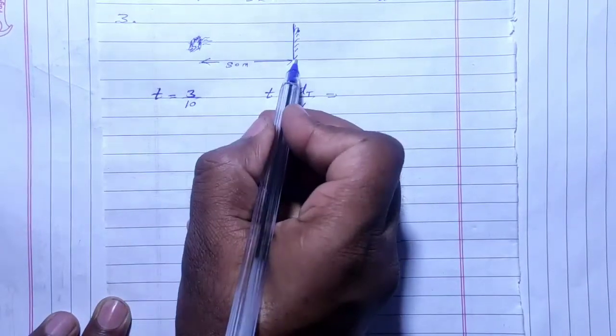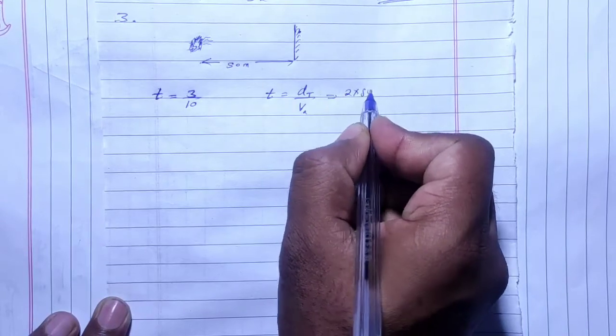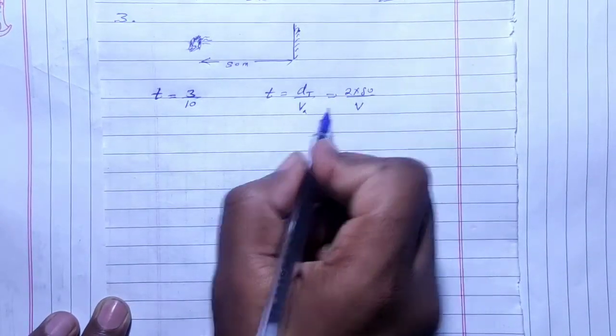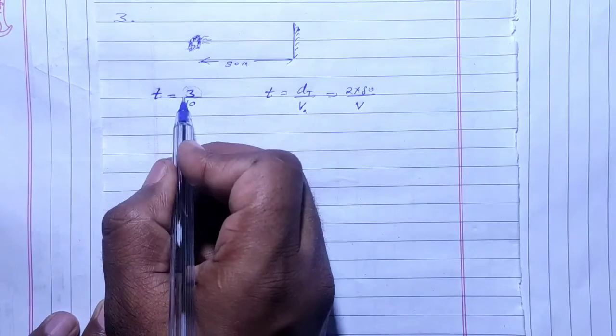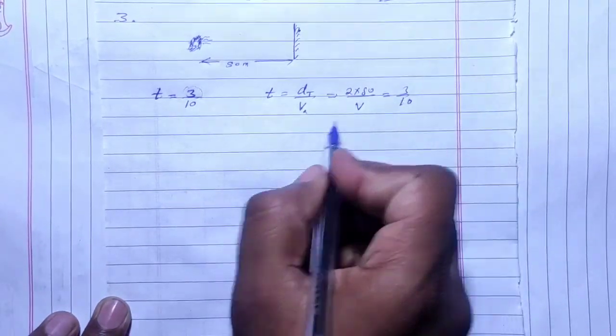The total distance is 2 times 50 meters. Speed we need to find, and the time interval is 3 by 10. So how much will V be?